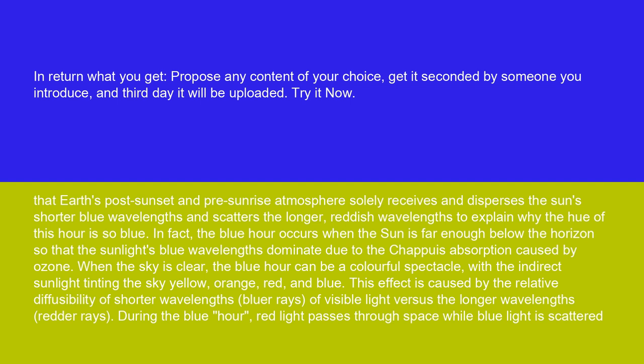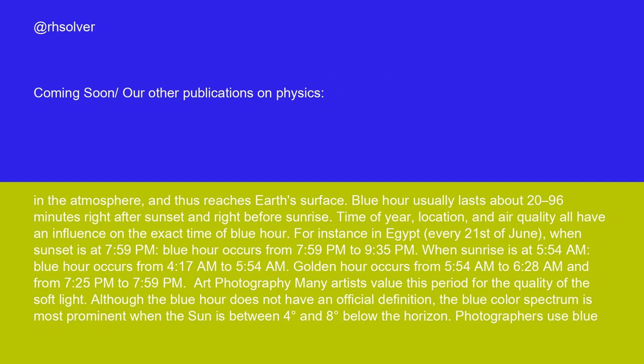When the sky is clear, the blue hour can be a colorful spectacle, with the indirect sunlight tinting the sky yellow, orange, red, and blue. This effect is caused by the relative diffusibility of shorter wavelengths — bluer rays — of visible light versus the longer wavelengths — red rays. During the blue hour, red light passes through space while blue light is scattered in the atmosphere and thus reaches Earth's surface.